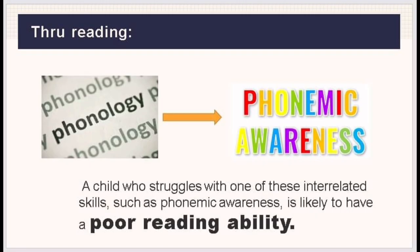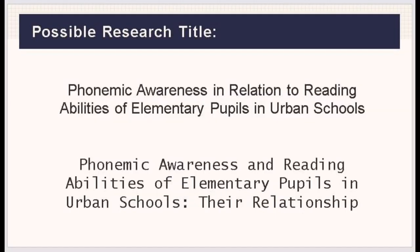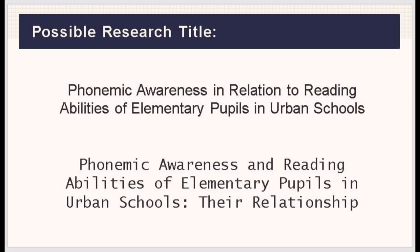Reading articles and studies about these subtopics will provide me the salient details and needed information about the topic I wanted to study. Let's say through my reading about phonology, I got information about phonemic awareness, which is important for reading and spelling. Through further reading, I obtained significant information from an article stating that a child who struggles with phonemic awareness is likely to have poor reading ability. So based from my initial research, the key words I had were: phonemic awareness, child, and reading abilities. So if I develop my research title, it could be: 'Phonemic Awareness in Relation to Reading Abilities of Elementary Pupils in Urban Schools,' or 'Phonemic Awareness and Reading Abilities of Elementary Pupils in Urban Schools: Their Relationship.'